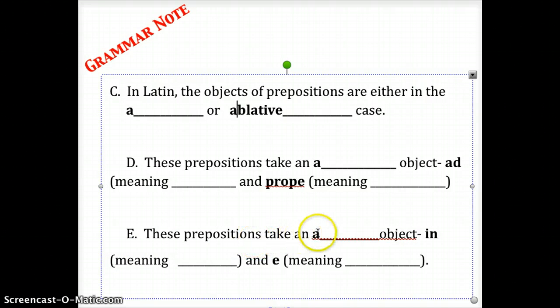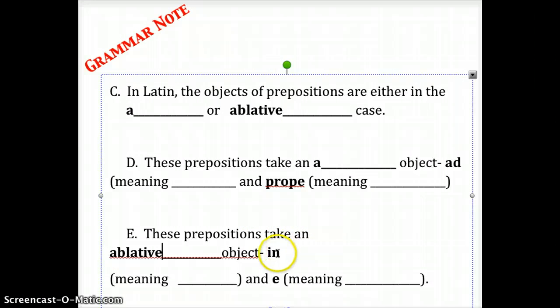And these prepositions take an ablative object. Again, ablative: in, which means in or sometimes on, and a, which means from or away from.